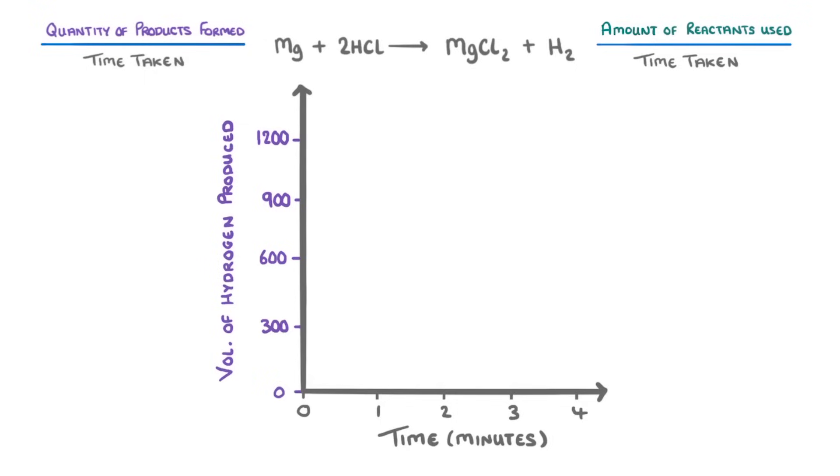At first, because there'll be loads of magnesium and acid that can react together, loads of hydrogen will be produced. So we get a very steep curve, which indicates a high rate of reaction.